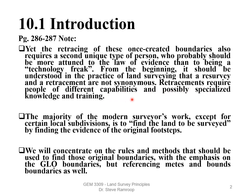Retracements require people of different capabilities and possibly specialized knowledge and training. The majority of the modern surveyor's work, except for certain local subdivisions, is to find the land to be surveyed as retracement — by finding the evidence of the original footsteps of the original surveyor. We will concentrate on the rules and methods that should be used to find those original boundaries, with emphasis on GLO (General Land Office) boundaries, but also referencing the metes and bounds boundaries and the 13 metes and bounds states as well.